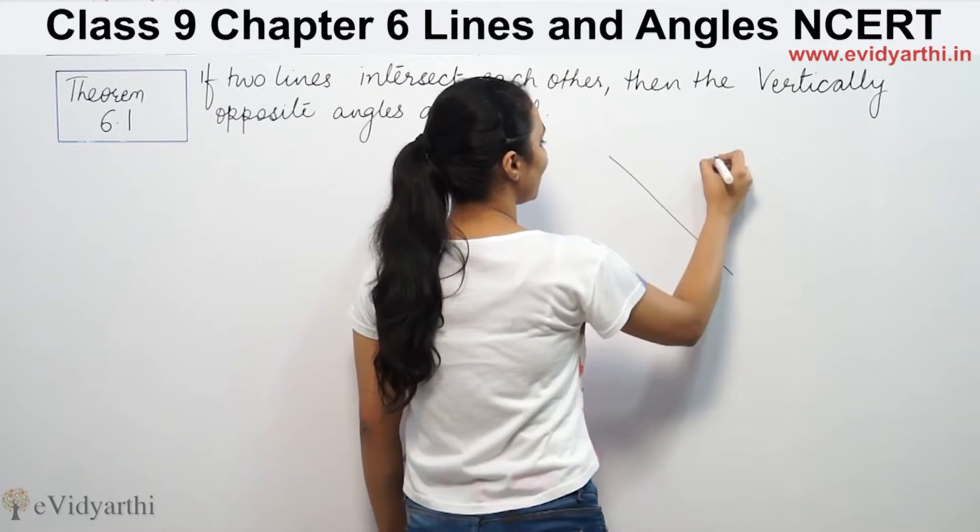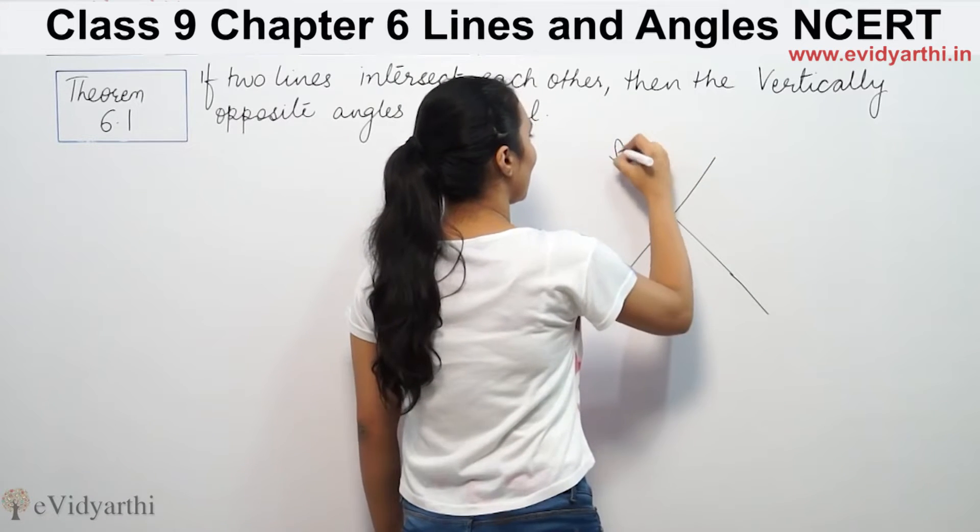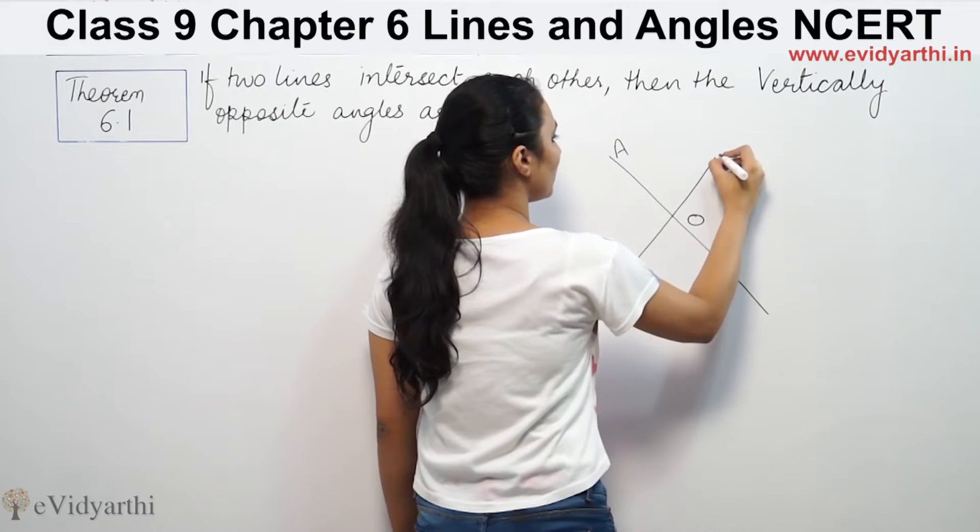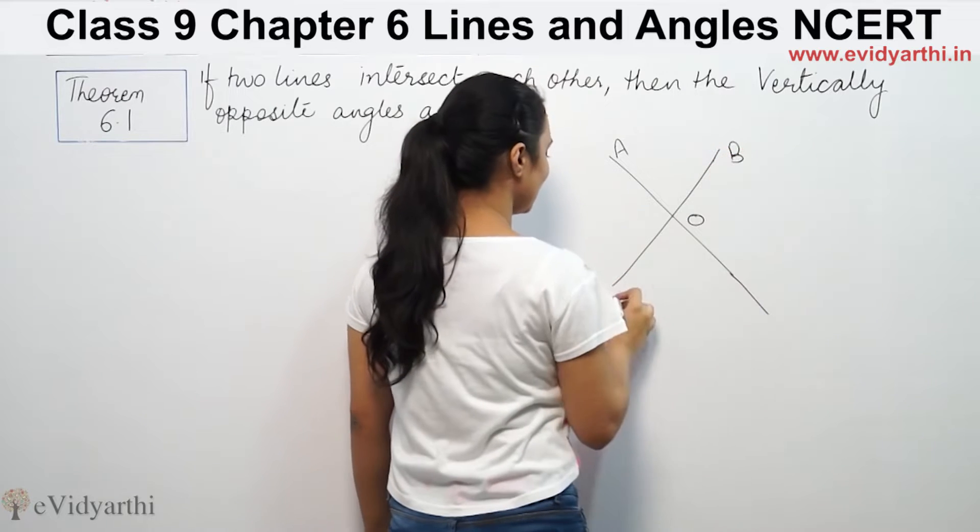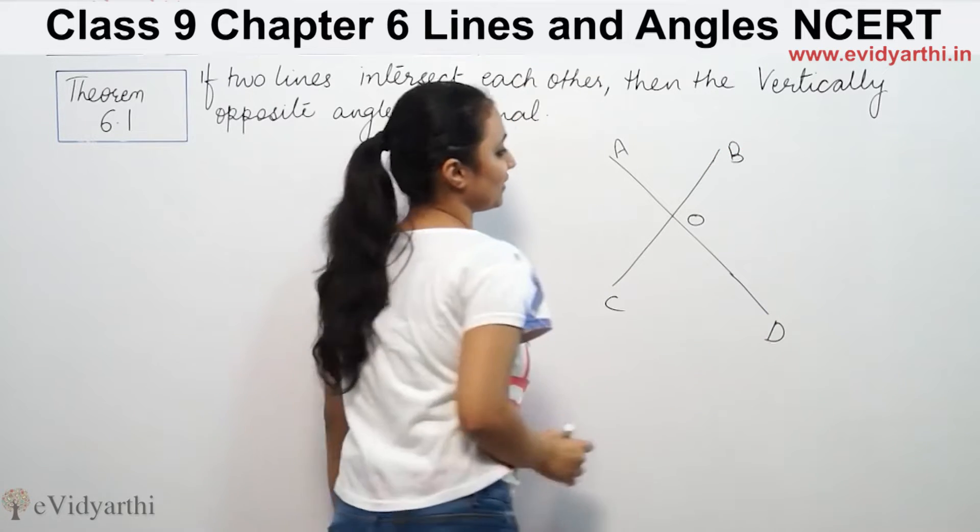We have two lines here. This is point A, this is O, this is B, C, and D. These are two lines.